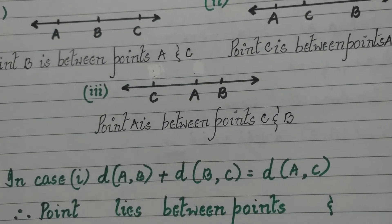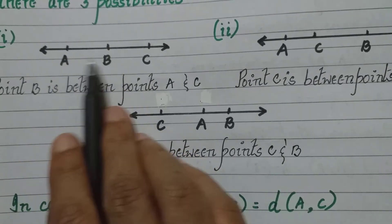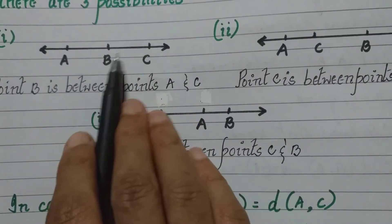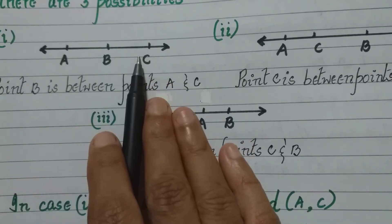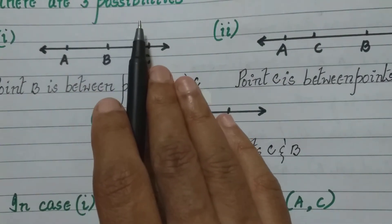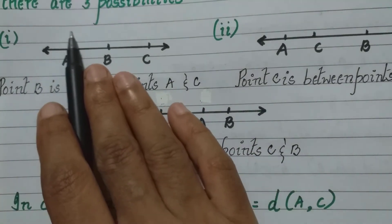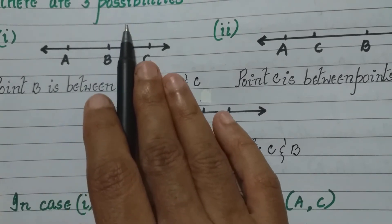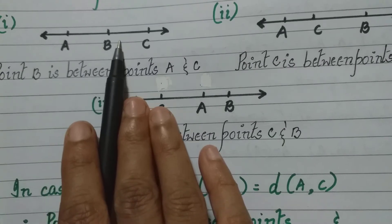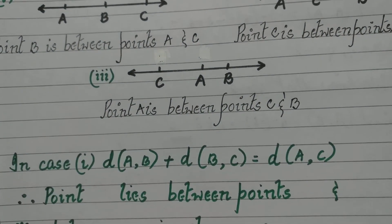Now in case 1, the distance between points A and B is written as D(A, B). The distance between points B and C is D(B, C). The distance between A and C is D(A, C). Notice that the full distance between A and C is obtained by adding the distance between A and B plus the distance between B and C. So in case 1: D(A, B) + D(B, C) = D(A, C).